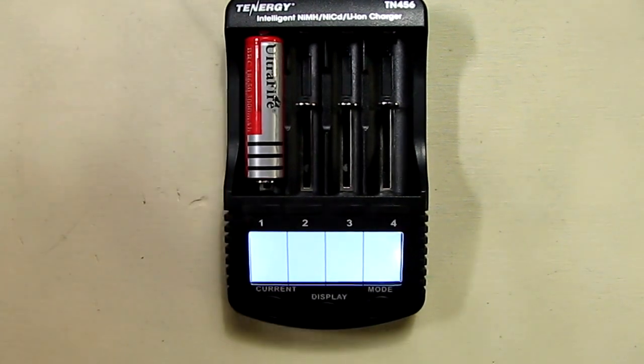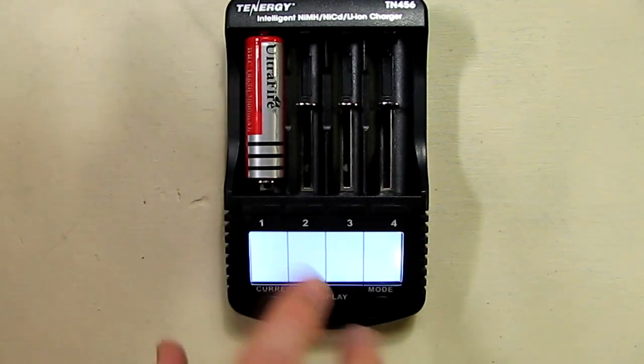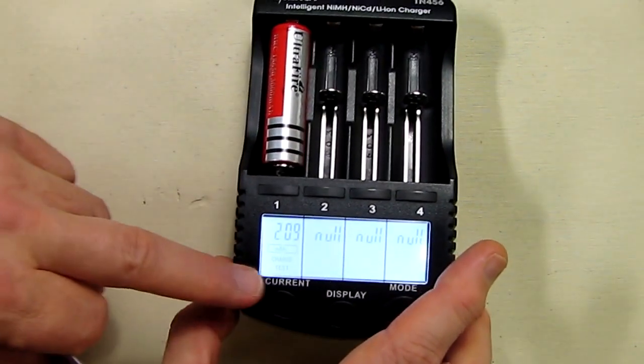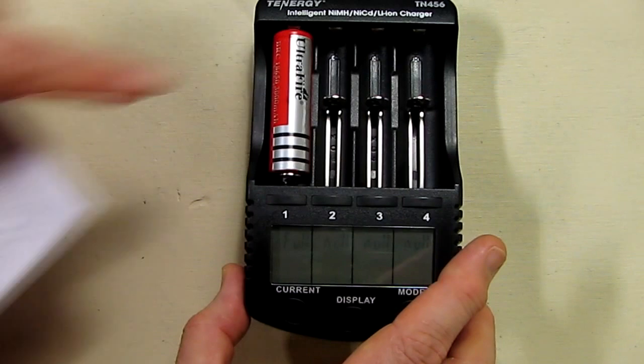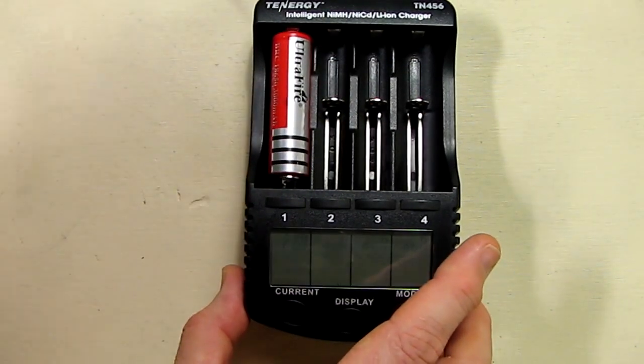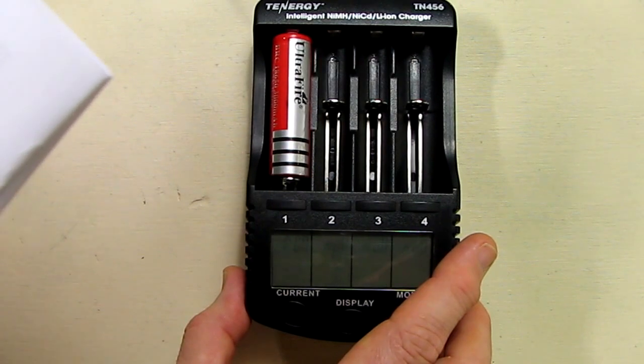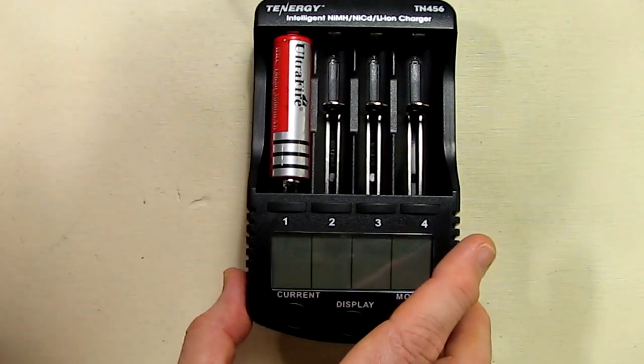So I just ran a charging experiment using the test mode. Look on the display right here, it shows test. And what it did is it charged the battery and then it did a discharge of the battery at 500 milliamp hours. And then that's stage 2. Then stage 3, it charged it at 1000 milliamp hours.